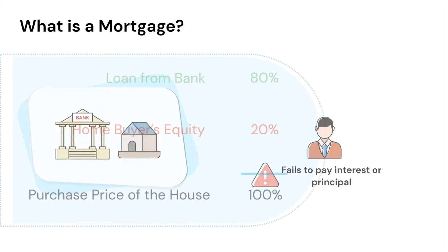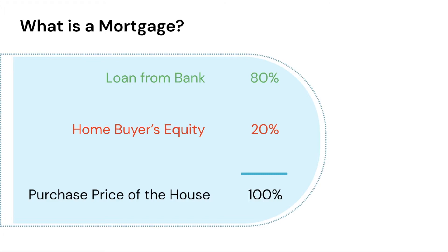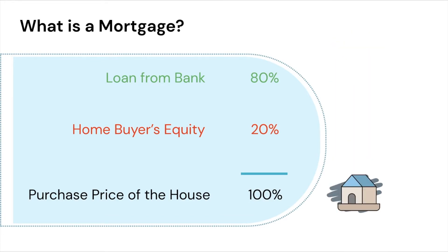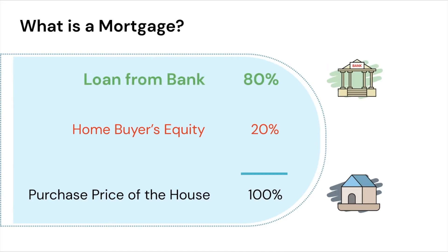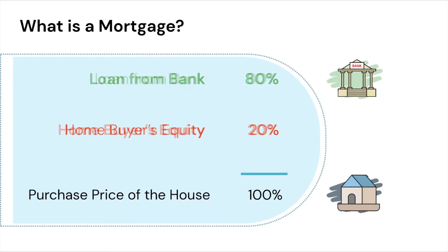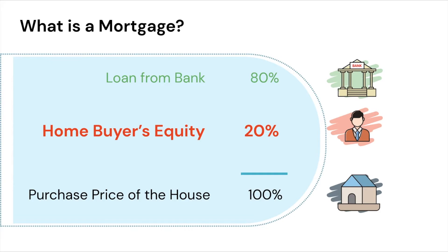To keep a further margin of safety, lenders generally lend only a percentage of the real estate asset's value. For example, a lender will lend up to 80% of a home's value and the balance of 20% will be put up by the buyer.